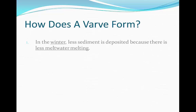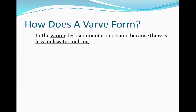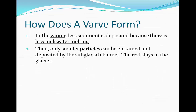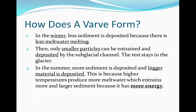So how do they form? Well firstly in the winter there's less sediment which gets deposited because there's less meltwater melting since temperatures are lower. As a result we have less actual meltwater in the channel, and because of this only smaller particles can be entrained because there's not as much energy since there's less discharge. The rest of the material gets entrained by the glacier and only smaller sediments are deposited.